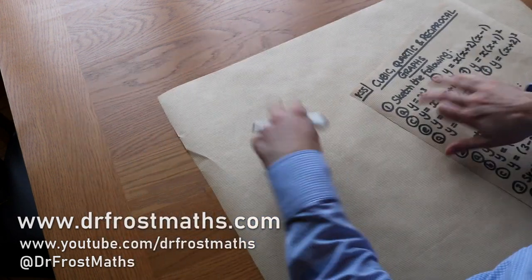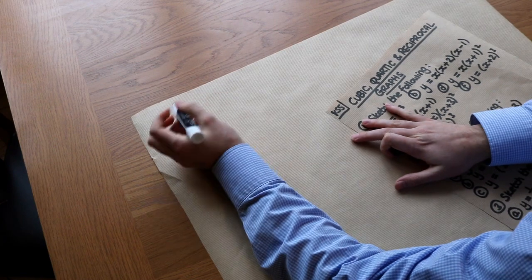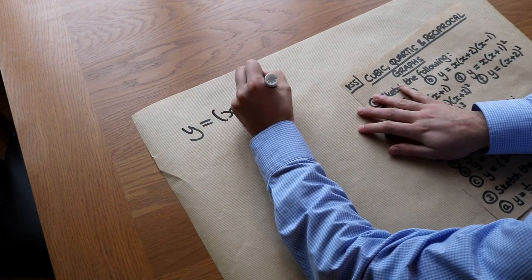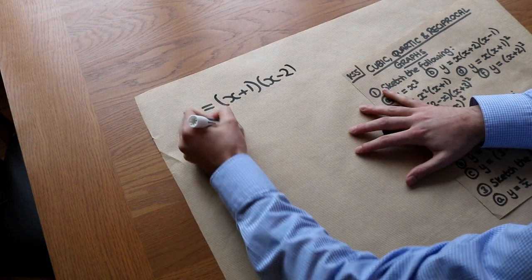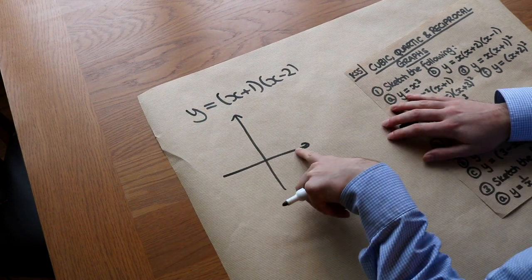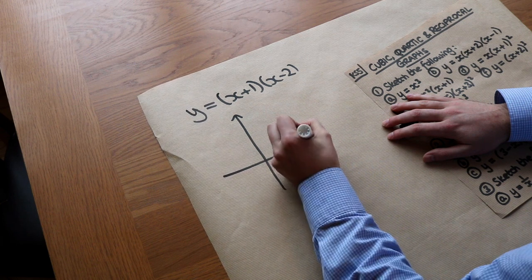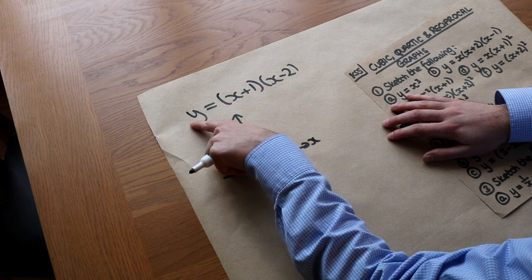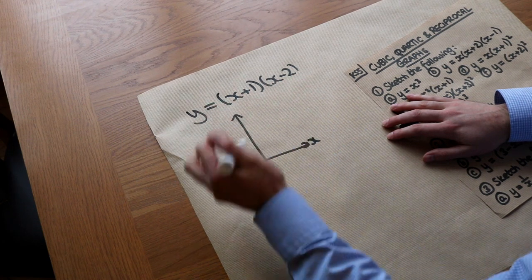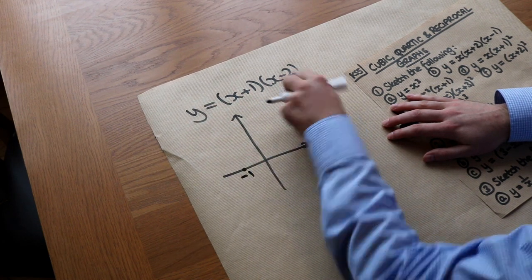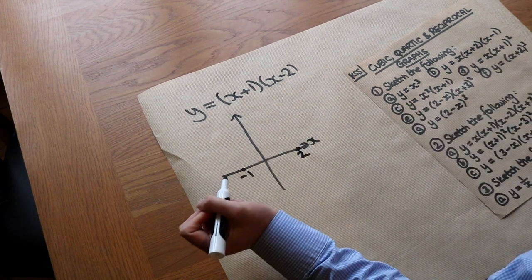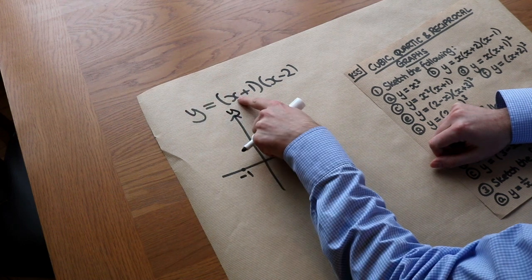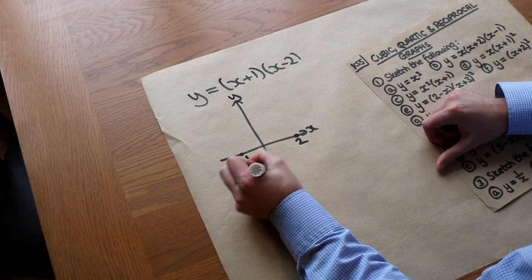Let's quickly recap how we sketch a quadratic graph. If we had y equal to (x+1)(x-2), we can work out the roots, the x-intercepts. If y is 0, then x plus 1 times x minus 2 equals 0, so x equals minus 1 or x equals 2. We can also work out the y-intercept: if x equals 0, we get (0+1)(0-2), which is minus 2.